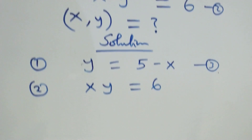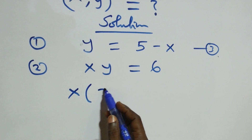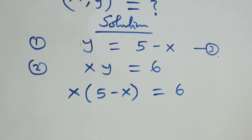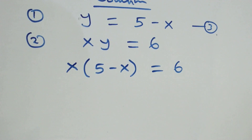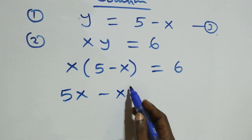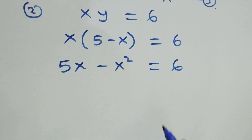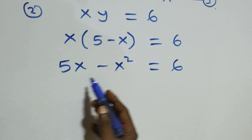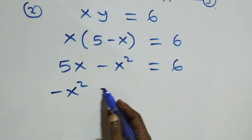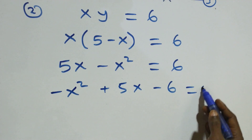From equation two, which is x times y equals six, we substitute the value of y from equation three. This becomes x times (five minus x) equals six. Opening the bracket, we get five x minus x squared equals six.